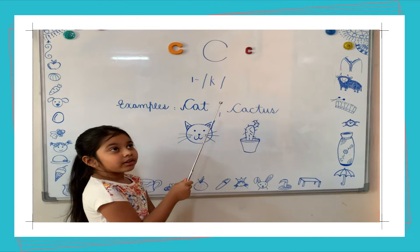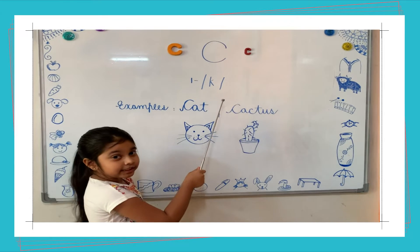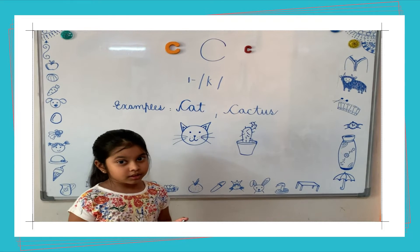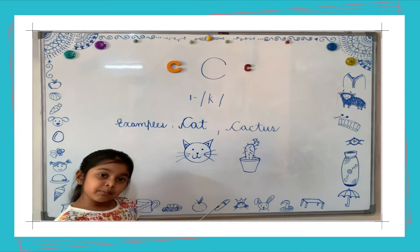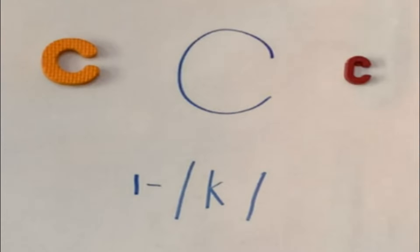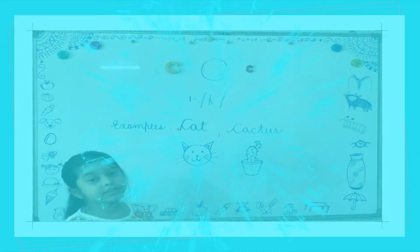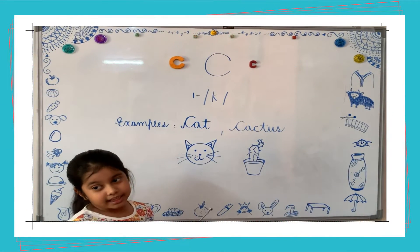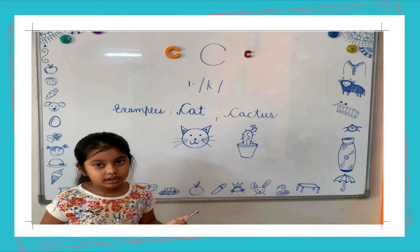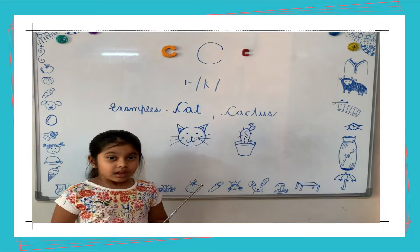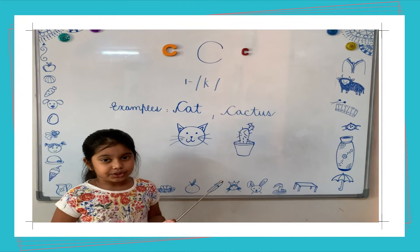Today we are going to learn the first phonetic sound of the letter C. The first phonetic sound is 'Kh' — this is its symbol. Let's look at its examples. The first example is Cat: Kh-A-Cat. I repeat: Kh-A-Cat.